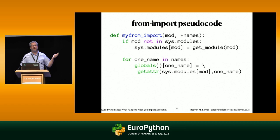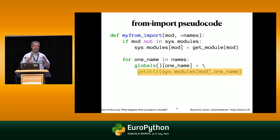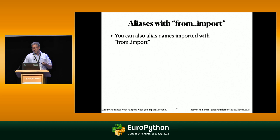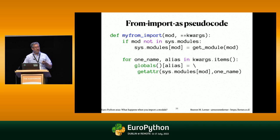In pseudocode, my 'from import' function takes one or more names using splat args, checks if the module is loaded, loads it if not, then one by one assigns them using getattr. It goes into the module object and assigns one or more variables based on what was in the dictionary. It's super, super common for people to think they're saving memory if they use 'from import' — now you know they're not. For 'from random import random as ri', we're simply changing the variable we're defining. It's the same mechanism.